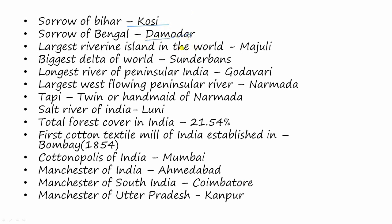The largest riverine island in the world is Majuli, and the biggest delta in the world is the Sundarbans. The longest river of peninsular India is Godavari, and the largest west-flowing peninsular river is the Narmada. The Tapi is also called the twin or handmaid of Narmada. The salt river of India is Luni.